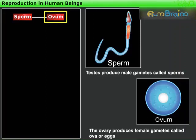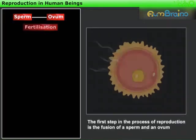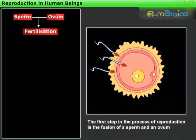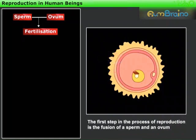Like the sperm, an ovum is also a single cell. The first step in the process of reproduction is the fusion of a sperm and an ovum. This is called fertilization.